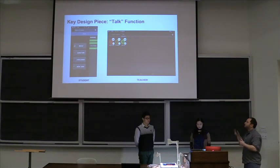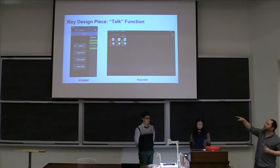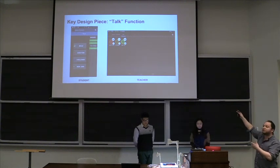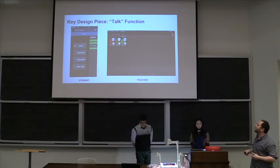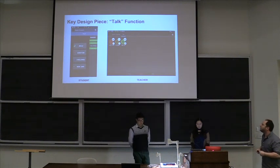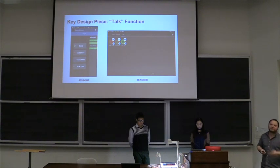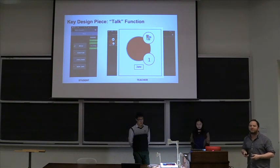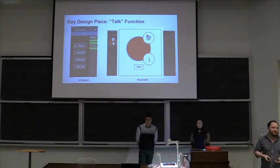When a student selects one of those participation intent descriptors, a talk ticket is created and sent to the teacher app on the right-hand side. You can see the icons pop up in real time. This gives the teacher four key pieces of information. One: it gives the teacher a visualization of student wait time — how long have students been waiting to participate?